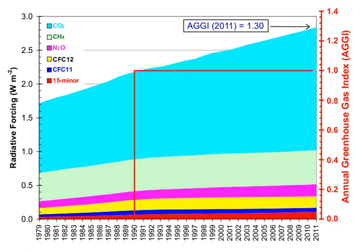The major non-gas contributor to Earth's greenhouse effect — clouds — also absorb and emit infrared radiation and thus have an effect on greenhouse gas radiative properties. Clouds are water droplets or ice crystals suspended in the atmosphere.